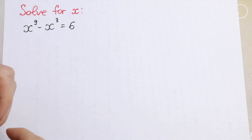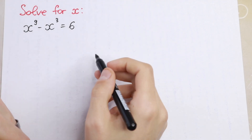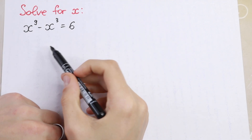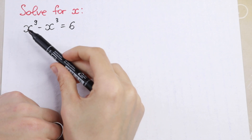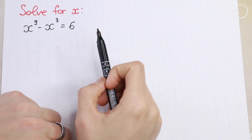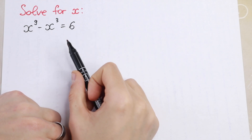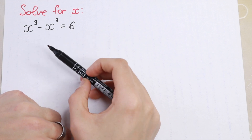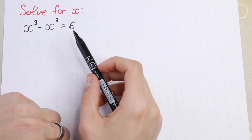Hello everyone and welcome back to my channel. In this video we are going to solve this interesting algebra problem. We have x to the 9th power minus x cubed equal to 6, and we need to solve this interesting equation.